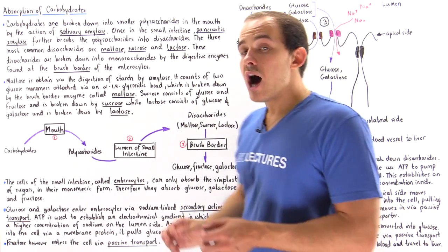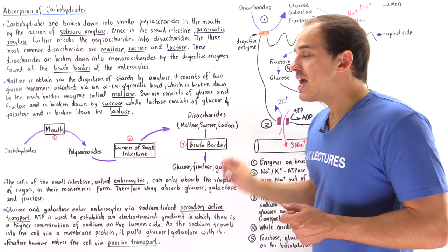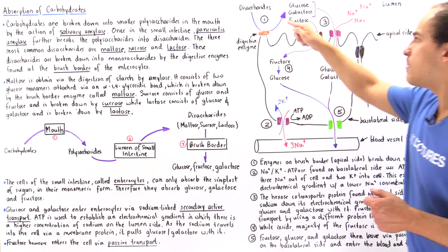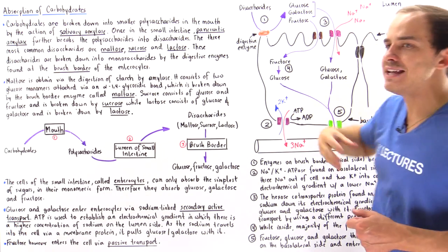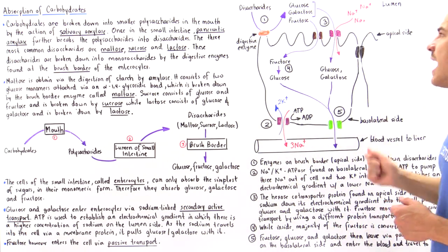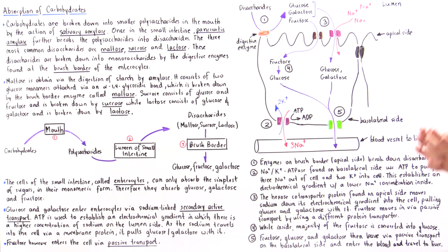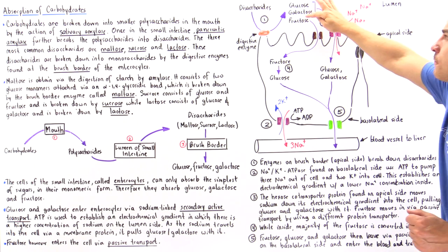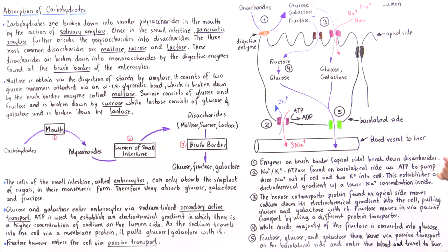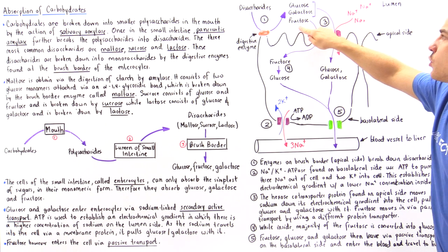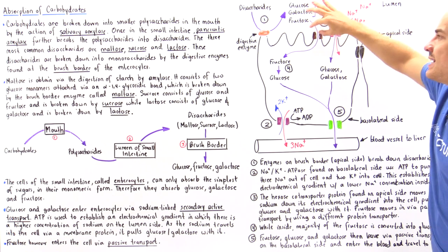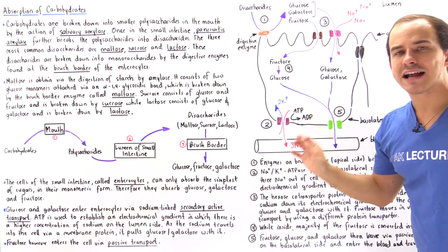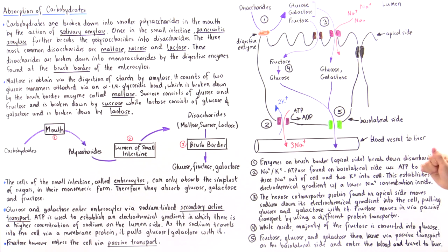Fructose, on the other hand, can easily pass across the cell membrane by using a special type of integral protein that allows the passive diffusion of fructose into the cytoplasm of the cell. Fructose can move into the cell via this integral protein without using any ATP molecules.